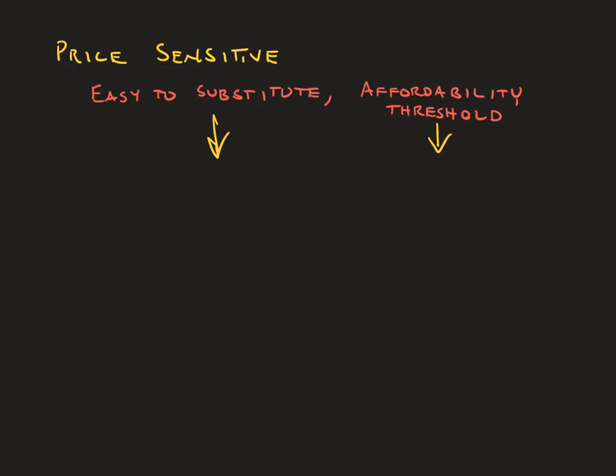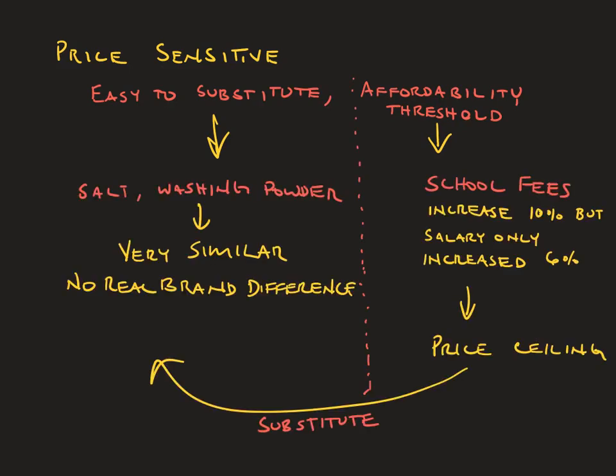So to recap, products that are price sensitive are either very easy to replace or substitute, or they might reach a point where people cannot pay anymore, sometimes called a price ceiling.